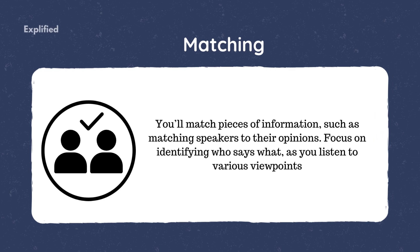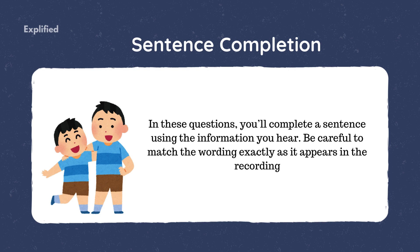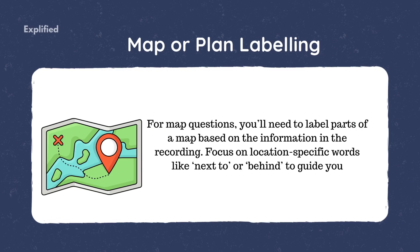Matching: you'll match pieces of information, such as matching speakers to their opinions. Focus on identifying who says what as you listen to various viewpoints. Sentence Completion: you'll complete a sentence using the information you hear — be careful to match the wording exactly as it appears in the recording. Map or Plan Labeling: you'll need to label parts of a map based on the information in the recording, focusing on location-specific words like 'next to' or 'behind' to guide you.